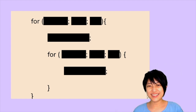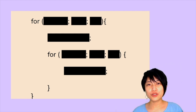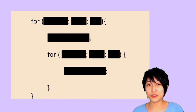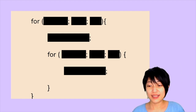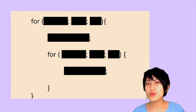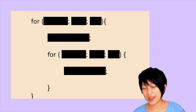A nested for loop is basically a for loop leveled up — it's a for loop inside a for loop. That sounds like a mind twister and it's hard to imagine exactly what that does, so I'm going to walk you through step by step with a pretty complex diagram.